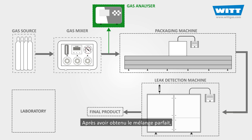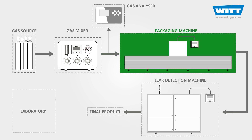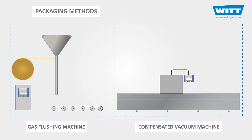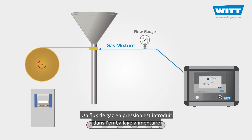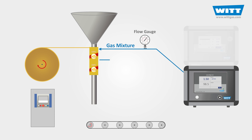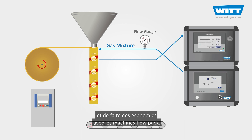After achieving the perfect mixture, the gas mixture at the required pressure will enter the packaging step. How the modified atmosphere is applied to the packaging depends on the type of machine used. The first method is called gas flushing, where we insert a pressurized gas stream into the food package so that the desired gas mixture replaces the air inside. Using an in-line analyzer, it's possible to reduce the amount of gas and by this save money in flow pack machines.